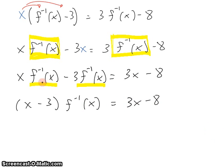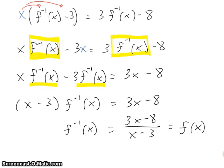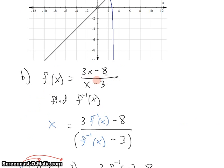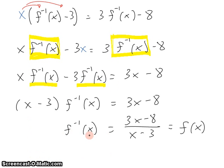What that did was it combined the two variables into one. And so now to solve this for f^(-1)(x), all I have to do is divide by (x - 3). And what do you know? We get an expression (3x - 8)/(x - 3), which you may recall is f(x). That's what we started with. So what that means is that the inverse of the function is the function. It's a self-inverse function.